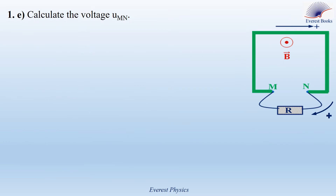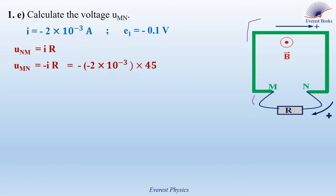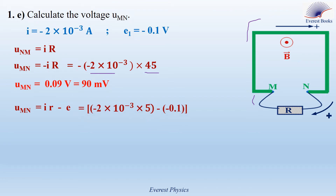Part 1E. Calculate the voltage U_MN. Calculating across the resistor: the positive sense flows from N to M through the resistor, so U_NM = IR, and U_MN = −IR = −(−2 × 10⁻³)(45) = 0.09 V or 90 mV. Verified across the coil: U_MN = Ir − E = (−2 × 10⁻³)(5) − (−0.1) = 0.09 V, which is also 90 millivolts.